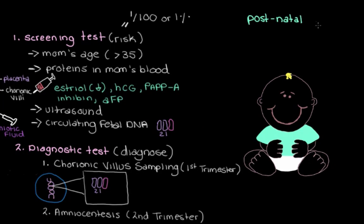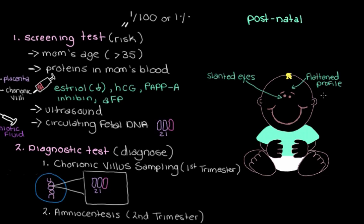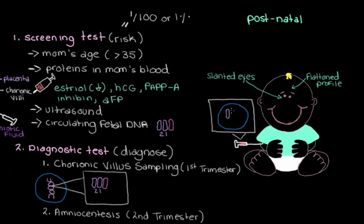In the postnatal period, once the baby is born, we can often see fairly early that a baby has the physical characteristics of Down syndrome — such as slanted eyes or the flattened profile of the face and bridge of the nose. However, some of these features can be present in children without Down syndrome. So if we suspect Down syndrome, we still need to take a blood sample from the child to confirm extra genetic material from chromosome 21.